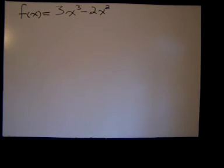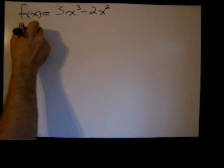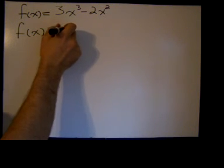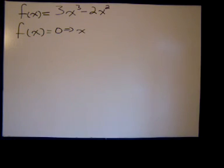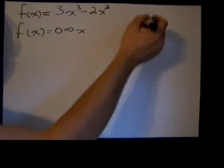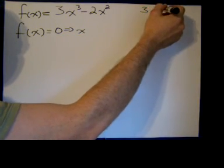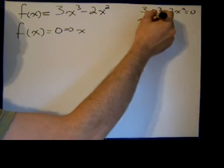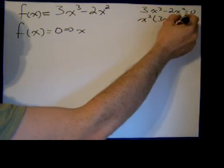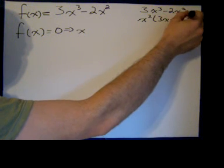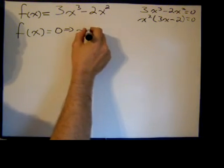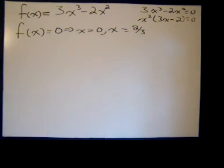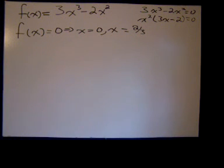So I start by saying, where is f(x) equal to zero? f(x) = 0 implies x equals what? Well, f(x) = 0 gives us the x-intercepts. 3x³ - 2x² = 0. We have a common factor of x², pull that out: x²(3x - 2) = 0. So we can see that x = 0 and x = 2/3.